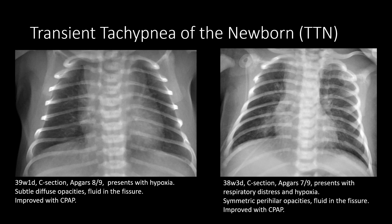You often see perihilar opacities, which are felt to be due to engorged lymphatics and interstitial fluid. You can see fluid in the fissures — this is sort of a disease of too much fluid, thought to be due to lack of compression of the lungs when moving through the birth canal. We can see perihilar streaky opacities and the minor fissure here indicating fluid in the fissure.